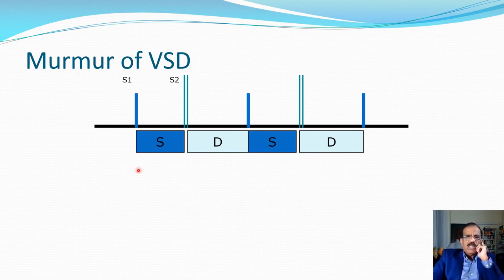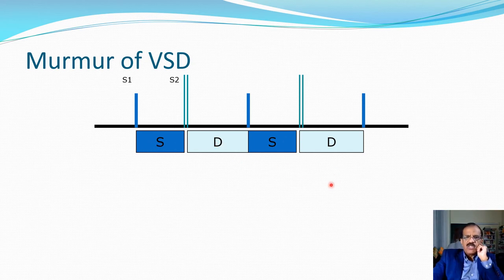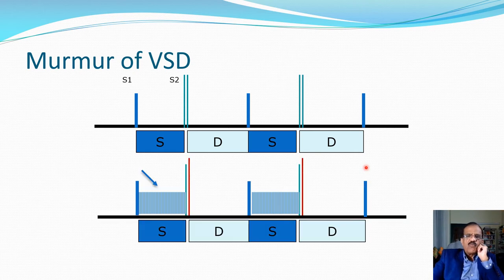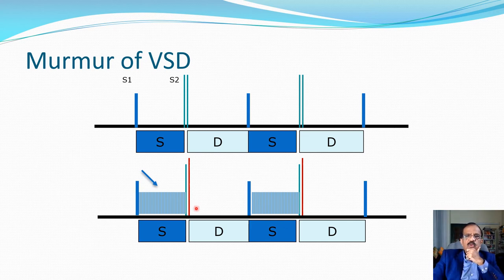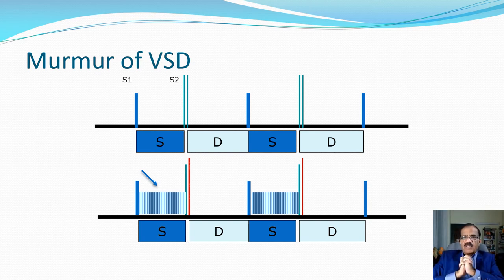The phonocardiogram shows S1 and S2 with its aortic and pulmonary components; systole is slightly shorter than diastole in the normal state. In VSD, the pan-systolic murmur starts with S1 and ends with S2, making it difficult to appreciate the heart sounds separately from the murmur. You also notice that the pulmonary component of S2 is taller — meaning louder — indicating pulmonary hypertension, which occurs in ventricular septal defect.